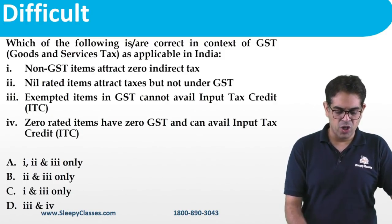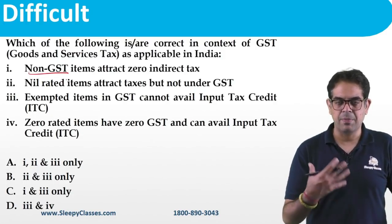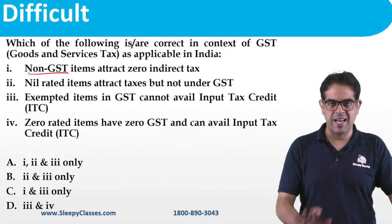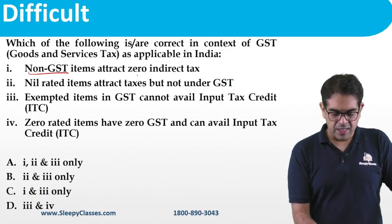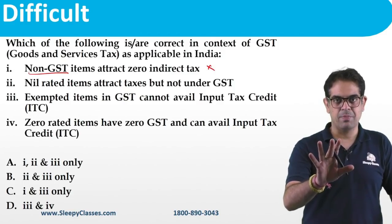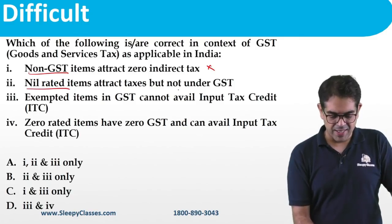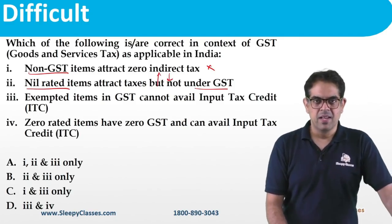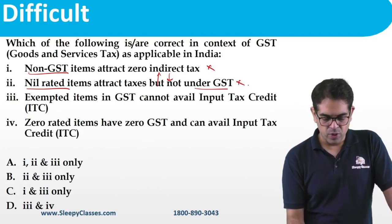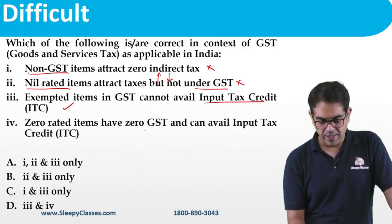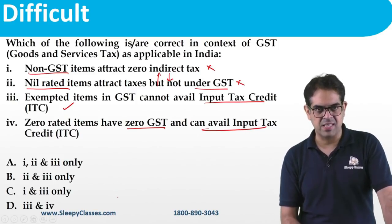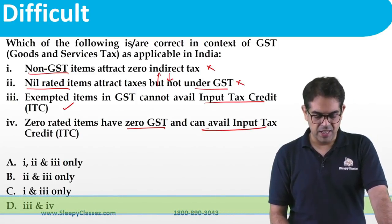Regarding GST: non-GST items like petroleum products (petrol, diesel) are not under GST but still attract tax — so statement that they attract zero indirect tax is wrong. Nil-rated items attract tax but not under GST. Exempted items cannot avail Input Tax Credit (ITC) — this is correct. Zero-rated items have zero GST but CAN avail input tax credit — this is also correct. The answer is 3 and 4 are correct.